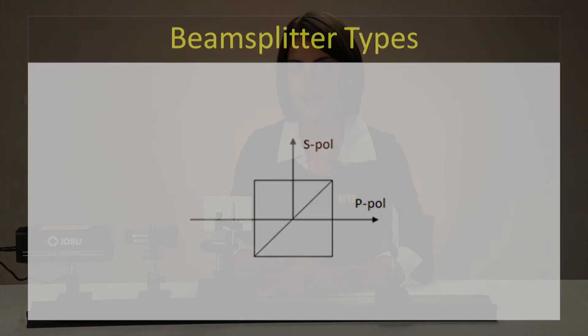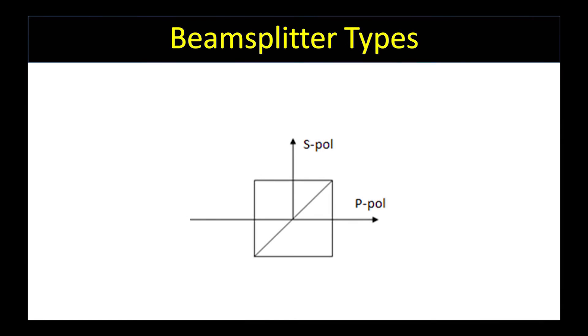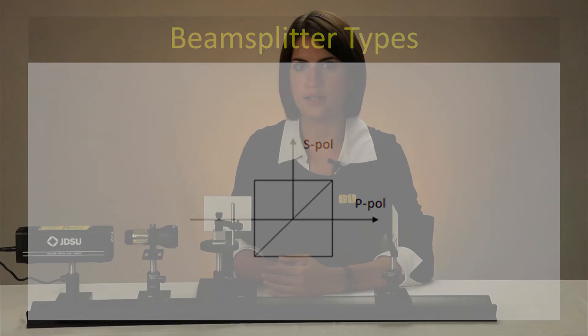You may notice that some of our beam splitters are labeled as polarizing or non-polarizing. Polarizing beam splitters will reflect S polarized light and transmit P polarized light. With non-polarizing beam splitters given randomly polarized input light, there will still be some polarization effects, but they depend on the specific type of beam splitter.